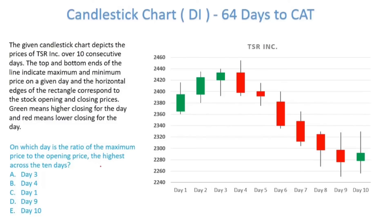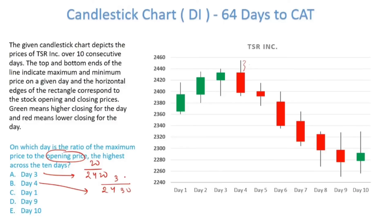On which day is the ratio of the maximum price to the opening price the highest? This is again a ratio comparison problem. We can look at the change divided by the base, where the base is the opening price. On day 3, opening is 2420 and the high is 2440 — a change of 20. On day 4, opening is around 2430 and the change is approximately 30 to 35. Day 4 gives about one and a half times the numerator of day 3 without a proportional increase in denominator, so day 4 is higher. Day 3 is eliminated.